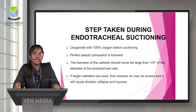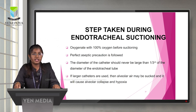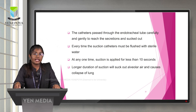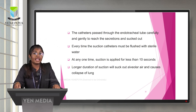Steps for endotracheal suctioning: oxygenate the patient with 100% oxygen before suctioning. Follow perfect aseptic precautions. The diameter of the catheter should never be larger than one-third the diameter of the endotracheal tube; if larger catheters are used, alveolar air may be sucked out, causing alveolar collapse and hypoxia. Pass the catheter through the endotracheal tube carefully to raise secretions and suction them out. Flush the suction catheter with sterile water each time. Apply suction for less than 10 seconds at any one time, as longer duration will cause lung collapse.